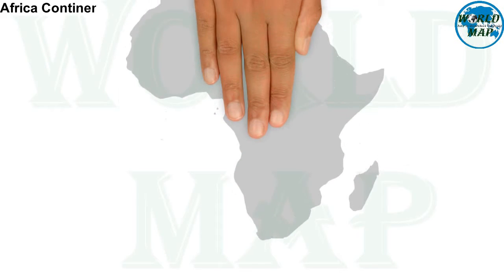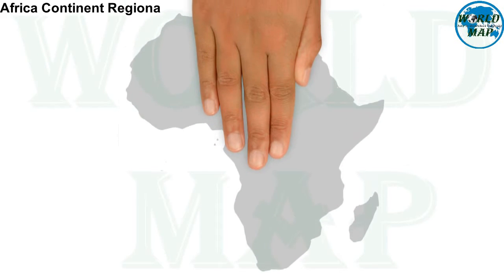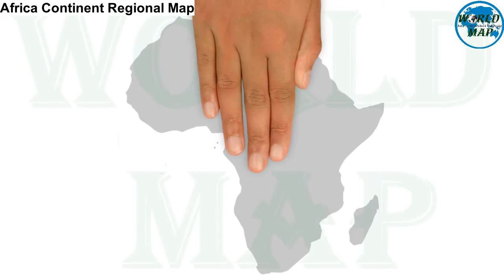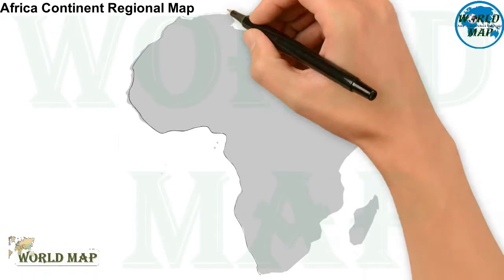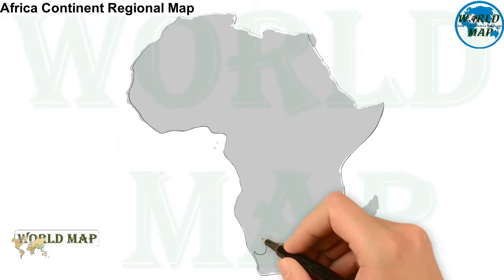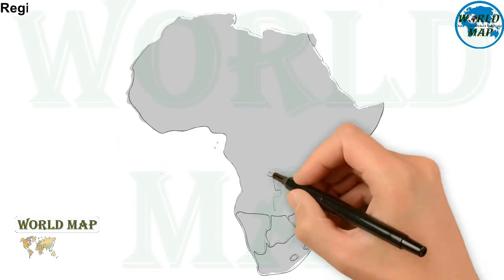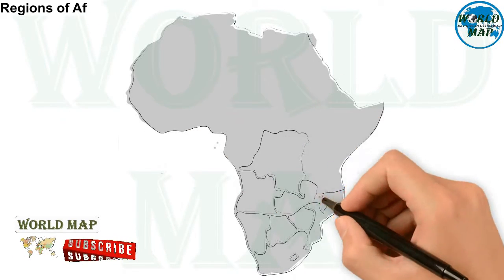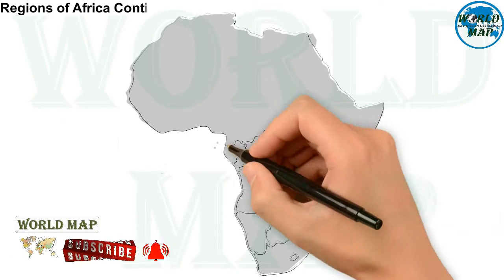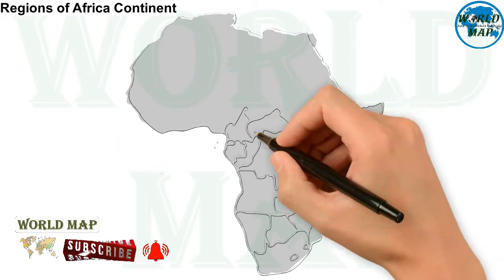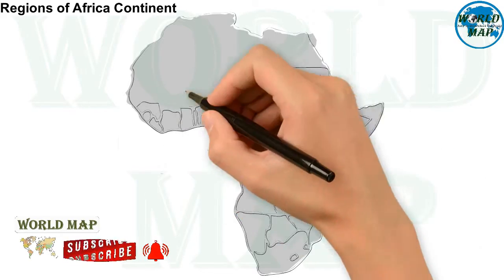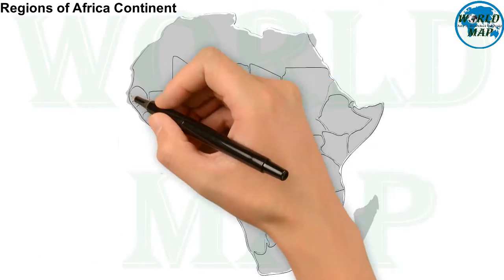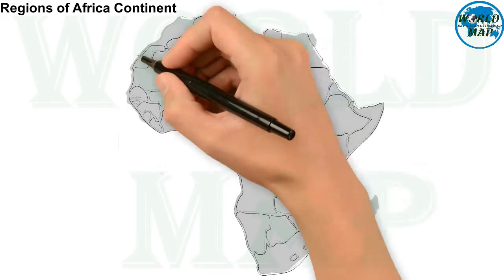Regions of Africa continent. Simply draw the map of Africa continent. Africa is the world's second largest and second most populous continent, after Asia in both cases.